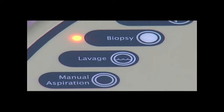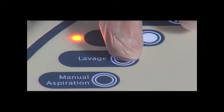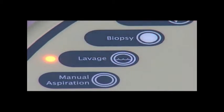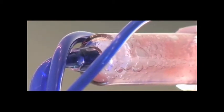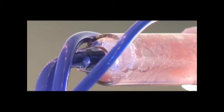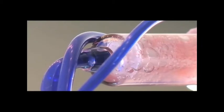After tissue acquisition is complete, switch the console to lavage mode by pressing the button marked Lavage. Lavage continuously irrigates and aspirates the biopsy cavity, allowing loose tissue and other fluids to be cleared from the biopsy site. Lavage the cavity until the fluid collected in the tissue collection chamber indicates the cavity is clear.